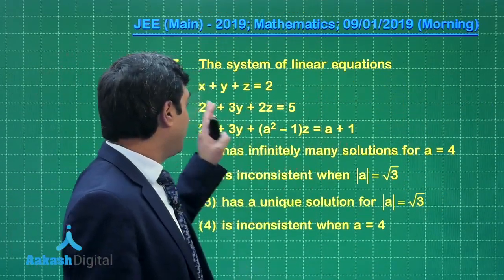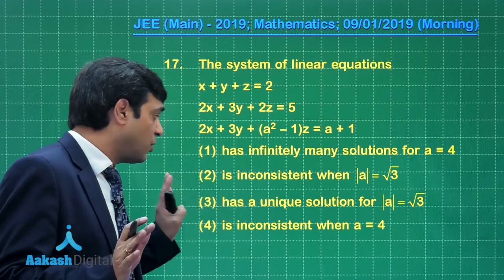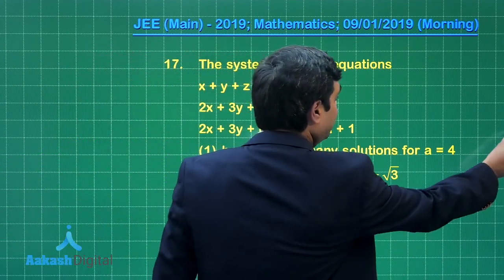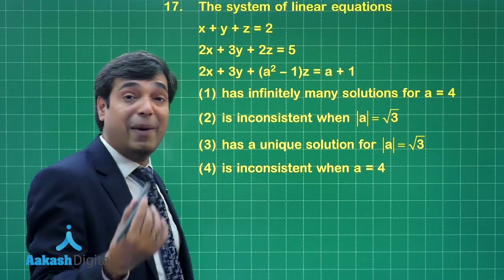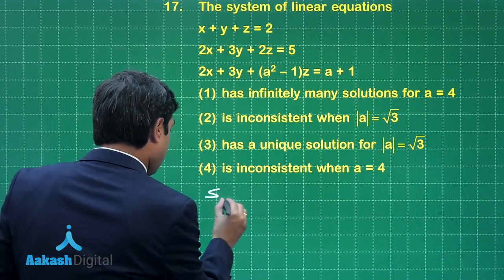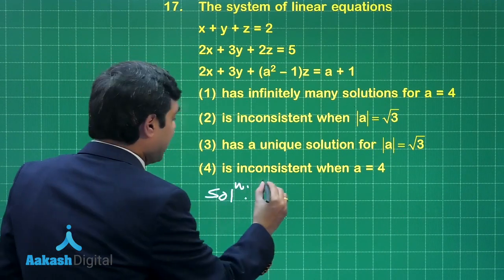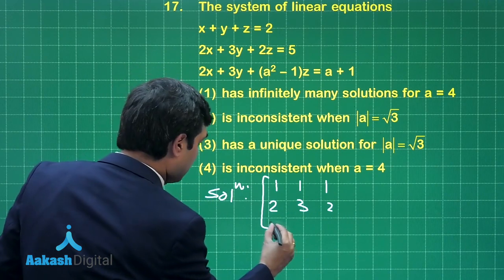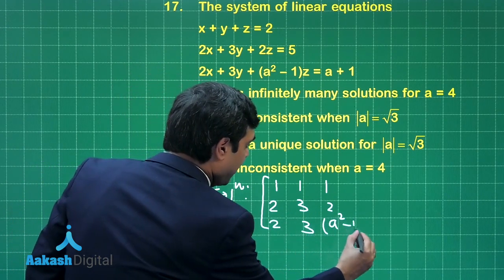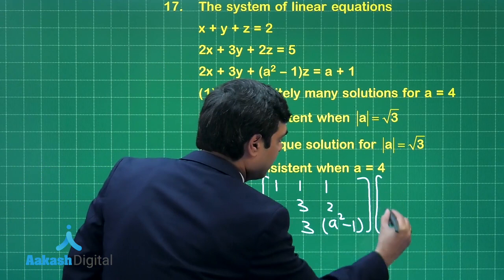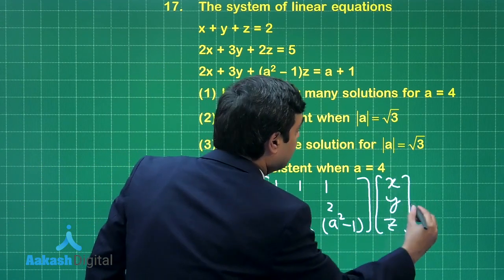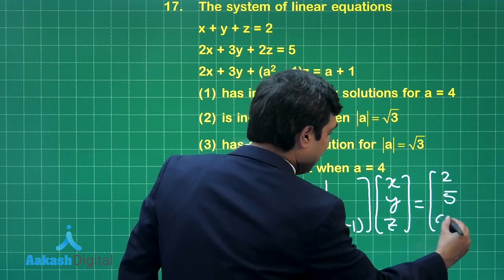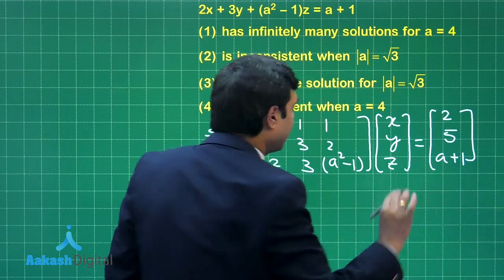The system of linear equations, 3 equations are given: has infinitely many solutions, unique solution, inconsistent—we have to discuss about it. Let us start this question by writing given equations in matrix equation form. We can write it as [1 1 1; 2 3 2; 2 3 a²-1] [x; y; z] = [2; 5; a+1].